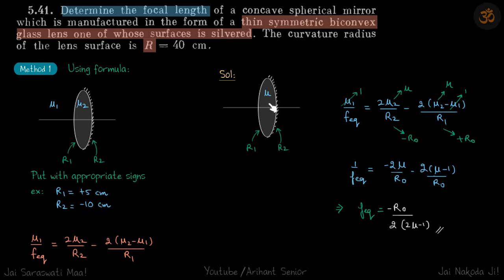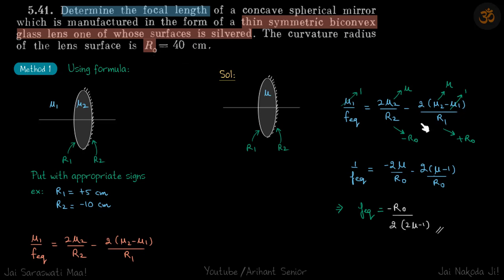In our problem, outside is mu1 = 1 and the refractive index of the lens is mu, so mu2 = mu. We set r2 = −r0 and r1 = +r0 (using r0 so we don't confuse the variable names with numerical values). After substituting and solving we get our answer — that is the quick formula method. Now let us see the proper way.